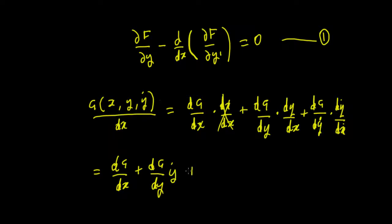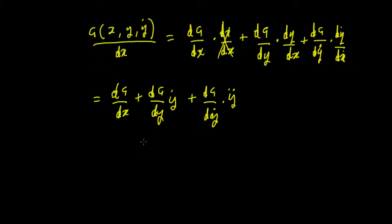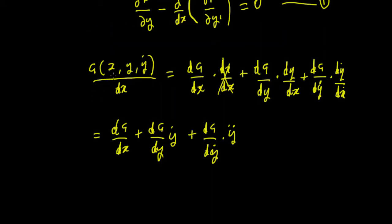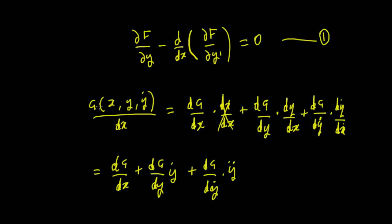This dy/dx term becomes y-dot — it's just the derivative. Plus the last term: dg by dy' times y-double-dot, the second derivative. So now we know how to generate the total derivative of a functional of this form, and it looks like that expression.